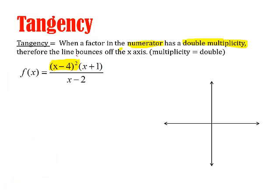What happens is the line is going to bounce off the x-axis at that x-intercept. For instance, in this equation, if I solve my x-intercepts, I get (4, 0) and I get (-1, 0). Well, because this has the square right there, this has tangency.